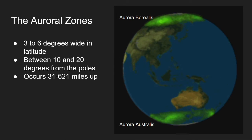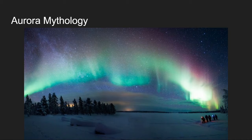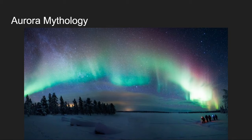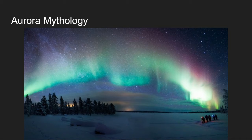The name aurora actually comes from Roman mythology — aurora is named for the Roman goddess of the dawn. She traveled from east to west announcing the coming of the sun. Borealis comes from the word boreas, which means wind, so the aurora borealis is this northern wind that brings the light. The aurora australis is the southern wind that brings the light.